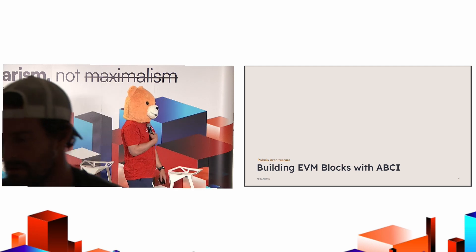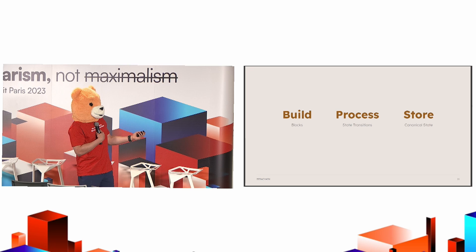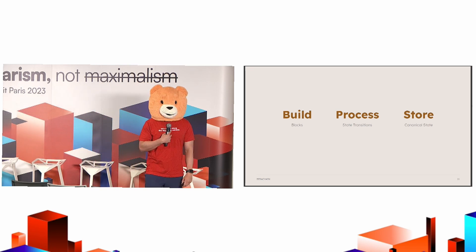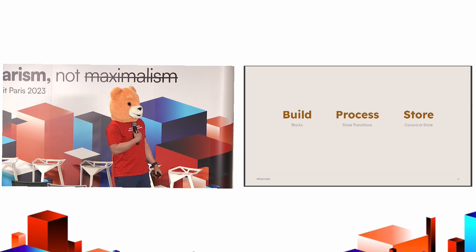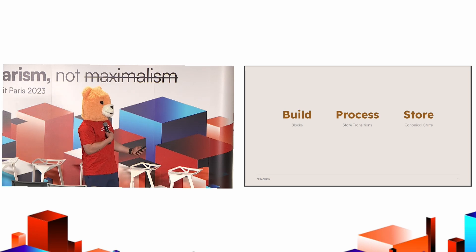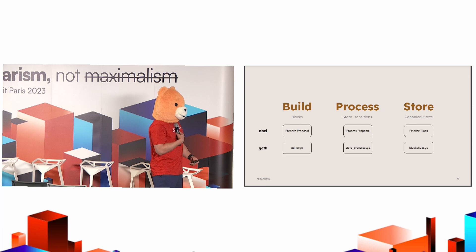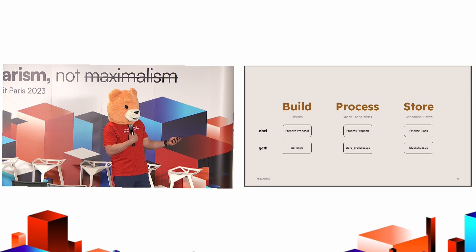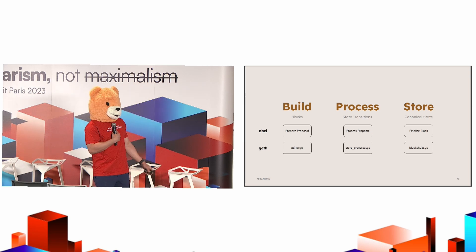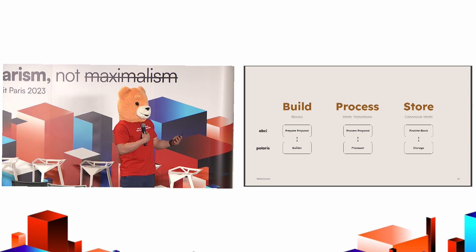When we went to build an EVM interactable with Cosmos and ABCI, we asked: what is the simplest, easiest way to build a blockchain? At the end of the day, we see three main processes. First, you need a way to build and assemble blocks — taking a list of transactions and ordering them. Second, you need to process those transactions: apply the VM state transition, store the data, etc. Third, you need to commit the block and make it part of the canonical chain. In ABCI this is prepare proposal, process proposal, and finalize block. In geth, this is the geth miner, geth state processor, and the state DB or blockchain. In Polaris, we generalize this into three main interfaces: a block builder, a block processor, and a storage provider.